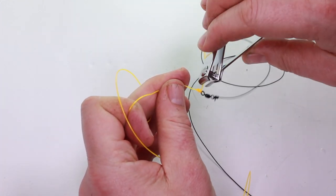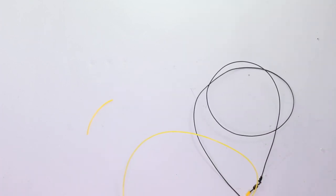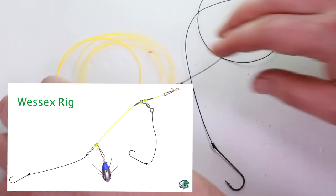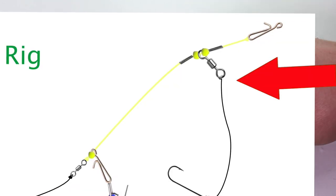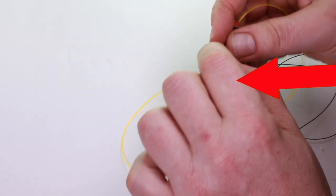Again, always moisten the knots. There we go, almost there. So it looks a mess here, but if you look on the diagram, you can see the only thing we need to add to this is another hook snood onto this swivel here between the beads.